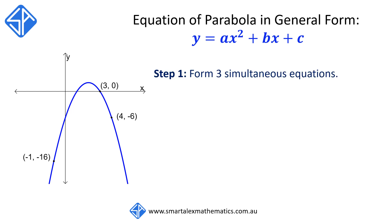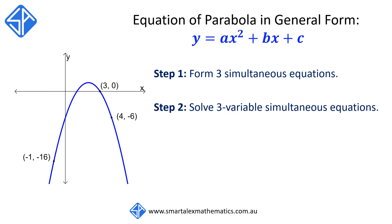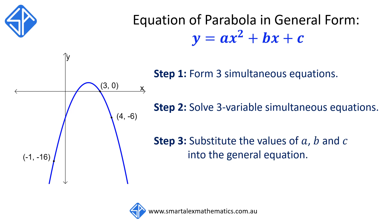There are three steps involved. The first step, we need to form three simultaneous equations using the points given to us on the diagram. The second step, we then need to solve the three variable simultaneous equations. After we solve the equations, we're going to get the values of a, b, and c, which we can substitute into the general equation to get the equation of the parabola.